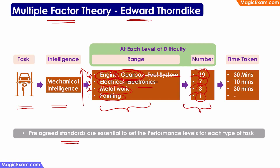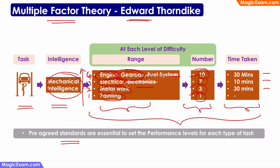I also look at the average time he takes to solve each of these different types of problems at different levels. Then I apply a formula suggested by Edward Thorndike to calculate this person's mechanical intelligence. If I do this for all the people working in my garage, I should be able to rank them in order of who are the best mechanics.